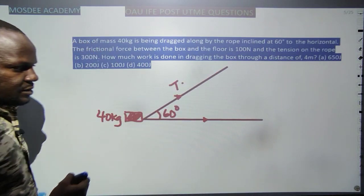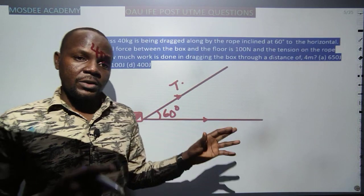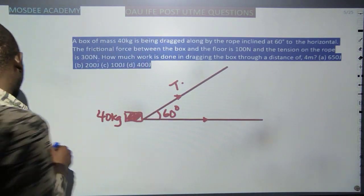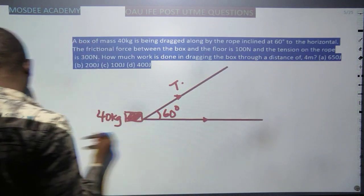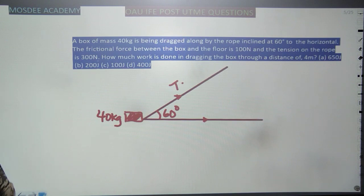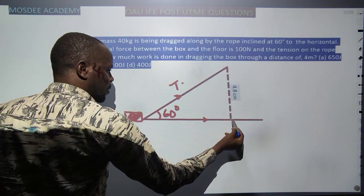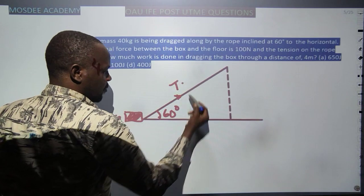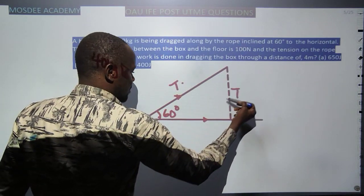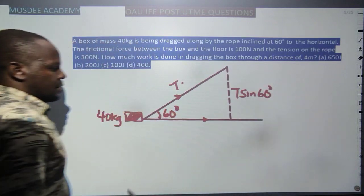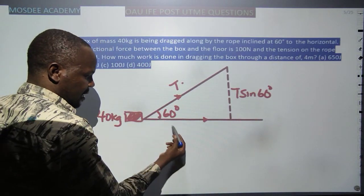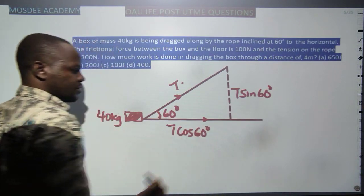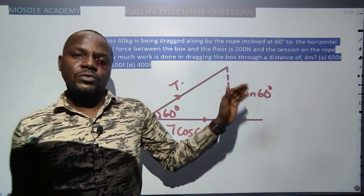Resolving the tension into two components: the vertical component is T sin60° and the horizontal component along the ground is T cos60°. No matter how the diagram looks, we resolve into two components. The frictional force opposes motion, acting in the opposite direction to the applied horizontal component.